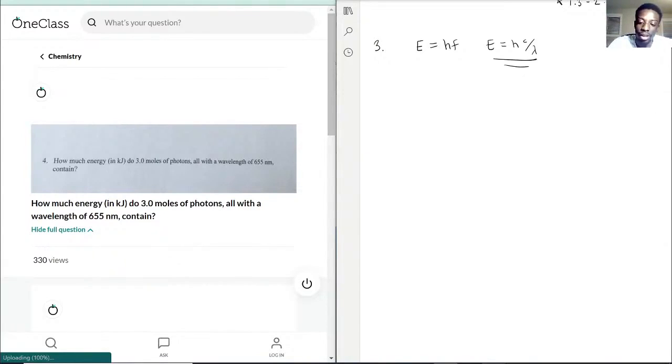So they say it has a wavelength of 655 nanometers. So the energy we're trying to solve is equal to H, that constant, which is 6.626 times 10 to the negative 34. I believe that's Planck's constant.